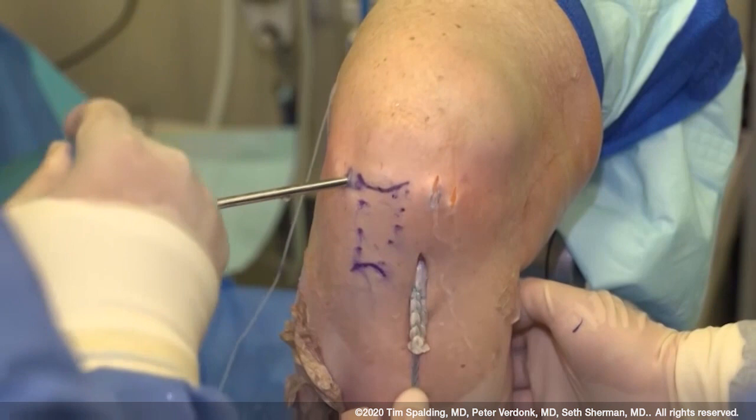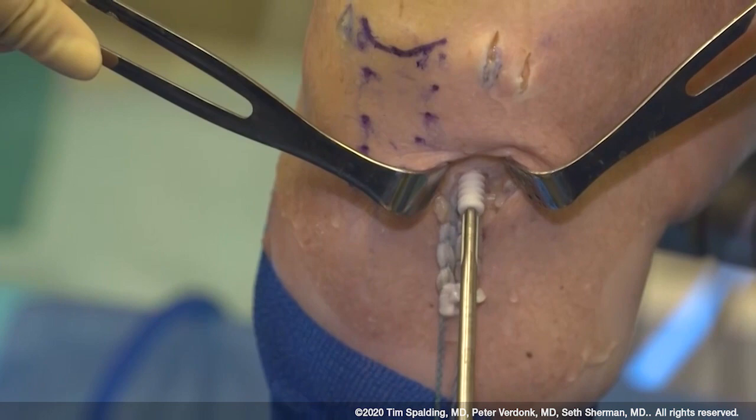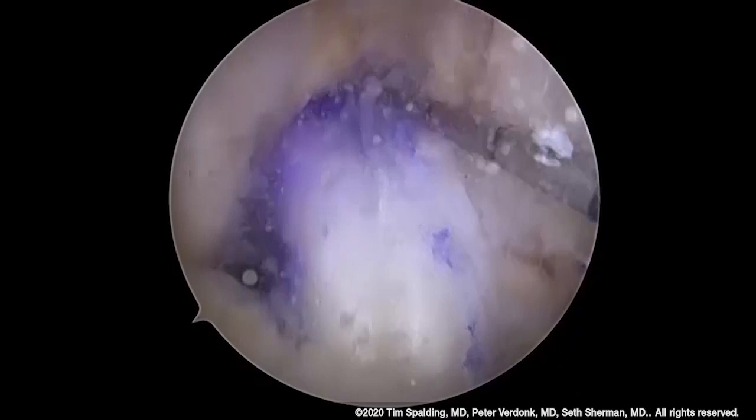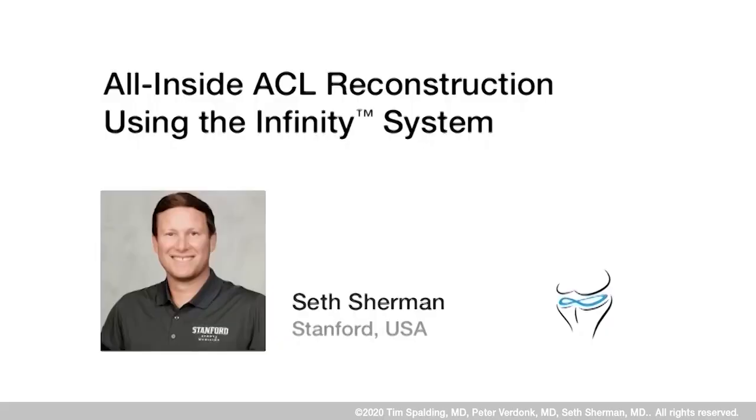The knee is taken through a range of motion arc and then brought to the desired level of extension. The graft is pulled with a maximum manual pull while a biocomposite screw is inserted.